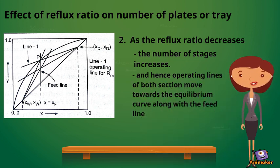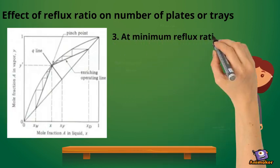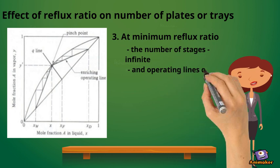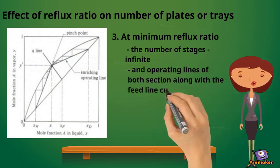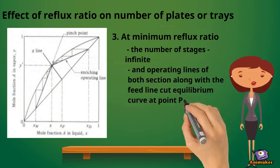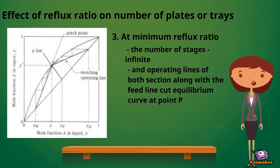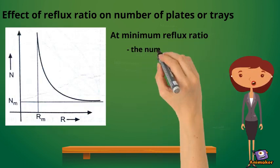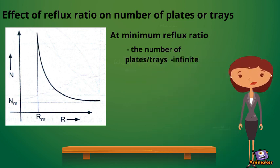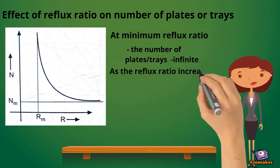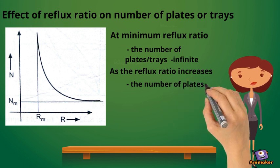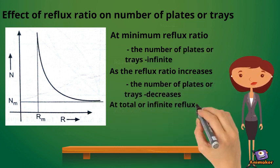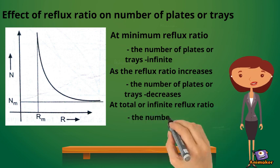At minimum reflux ratio, the number of stages is infinite, and the operating lines of both sections along with the feed line cut the equilibrium curve at point P. In short, at the minimum reflux ratio the number of trays in the distillation column is infinite. As the reflux ratio increases, the number of trays or plates decreases, and at total or infinite reflux ratio, the number of trays or plates in the distillation column will be minimum.